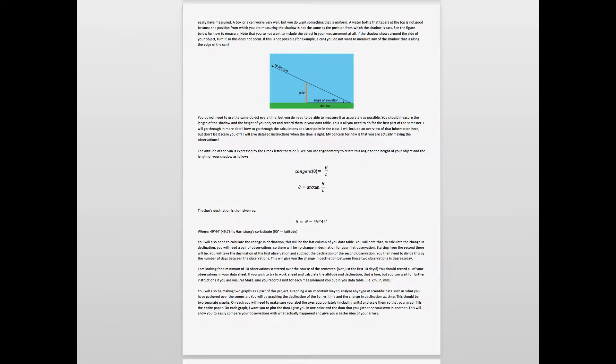You want something that is uniform in shape. A water bottle is not a good thing to use because it tapers at the top. Something that comes to a point at the top is not a good object to measure because the shadow is cast from this point and you're measuring from here, so you're not measuring the true length of the shadow. In this case you're going to be underestimating the length of the shadow because the object tapers. A box or can, something that is the same diameter at the top and bottom, is very good to use.